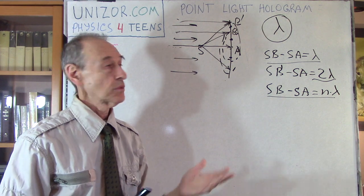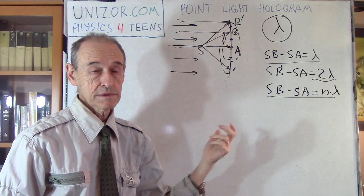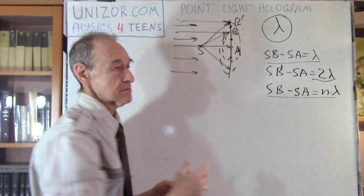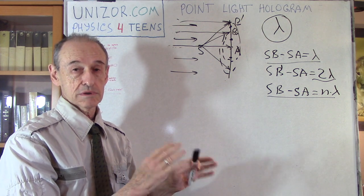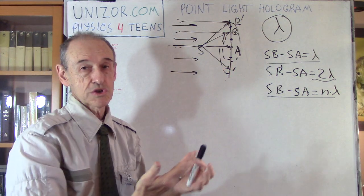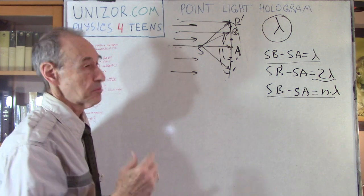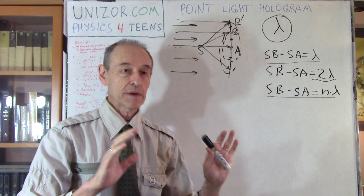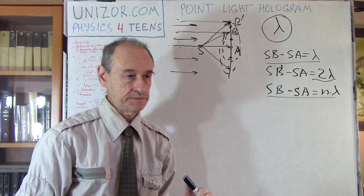Now I'd like to consider this interference picture as a recording of point S. How can I do it? Well, if this is a glass screen, and on the glass I see dark and bright circles, I will paint the dark circles with black paint and leave the bright ones transparent — since the glass is transparent. Now I have this glass plate with concentric dark circles painted on it. And I am stating that this plate is actually a picture — a three-dimensional picture — of point S.